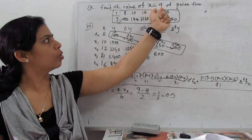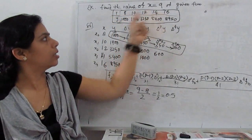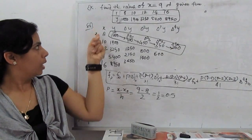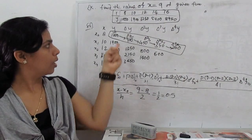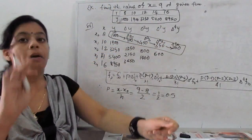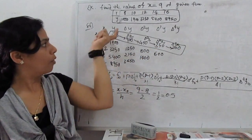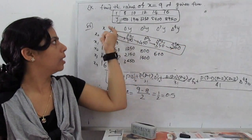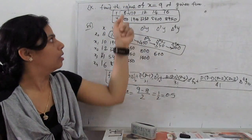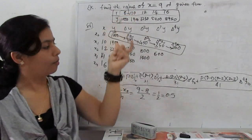Let me show one more example on the Newton forward operator. Find the value at x = 9 for the given function, where data is given as x = 8, 10, 12, 16 and corresponding y values. Step 1: tabulate the Newton forward difference table. We calculate differences and use upward diagonal values for the forward formula. We use the forward formula because x = 9 is between 8 and 10 — near the beginning of the table.